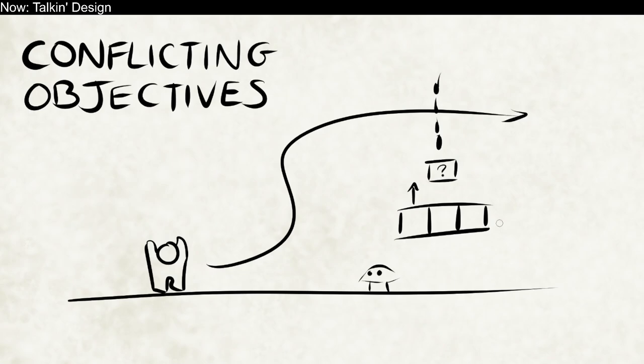If I go up that vine, am I going to reach the end of the level faster? Well, it's a new place to go, so I should explore it. You start to balance out these objectives, and that's where the joy of this kind of game comes from. All of these conflicting objectives come together into a stew of possibility.